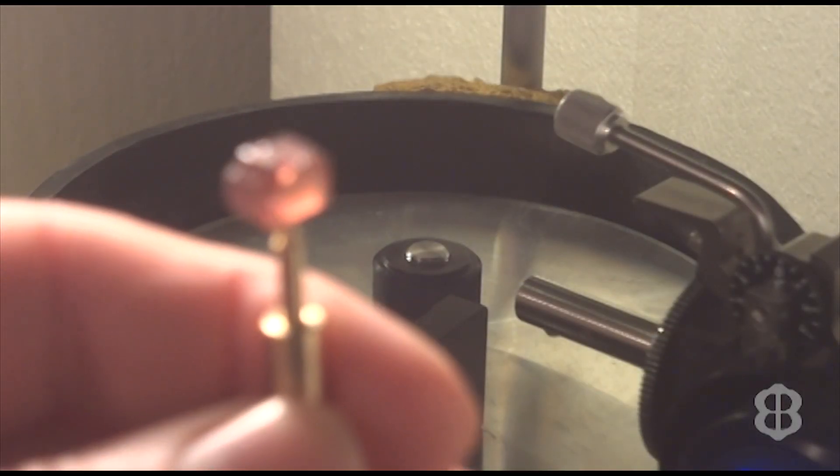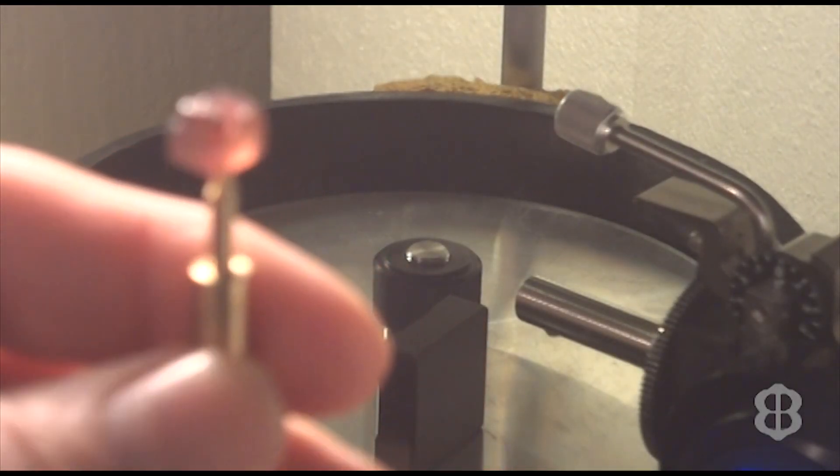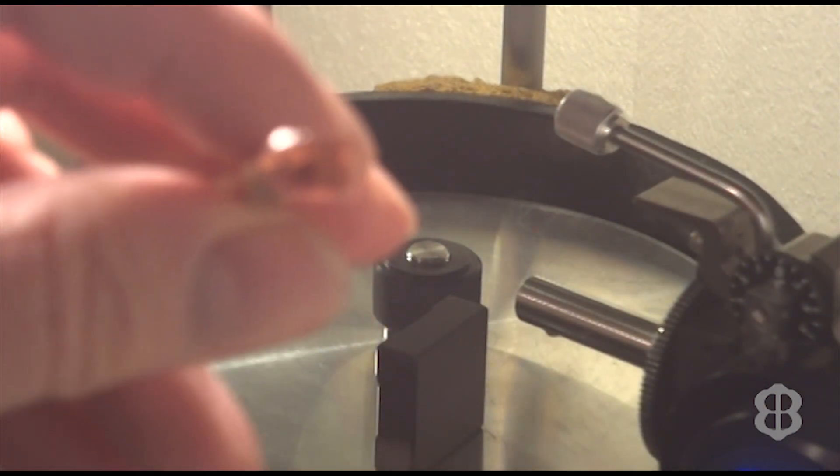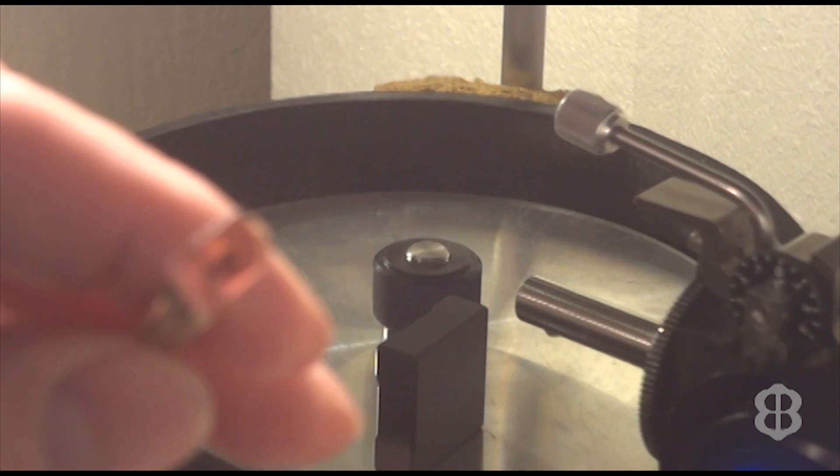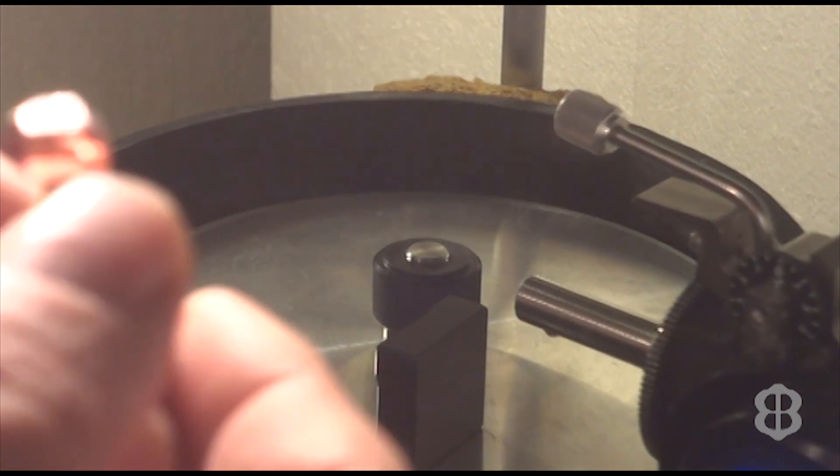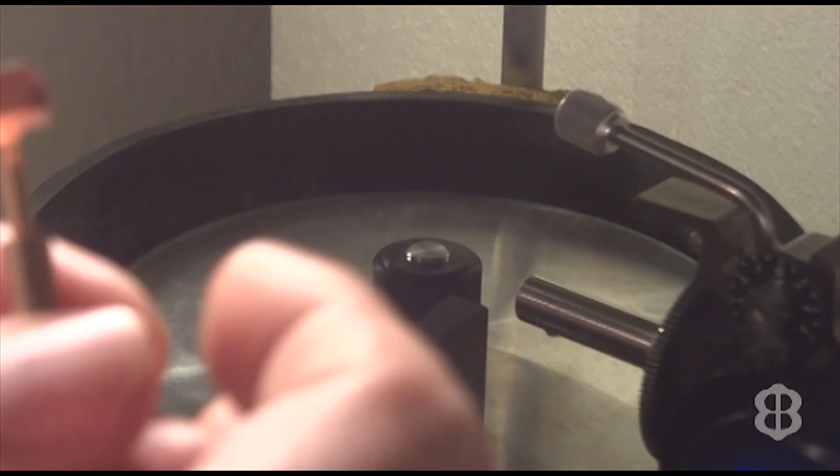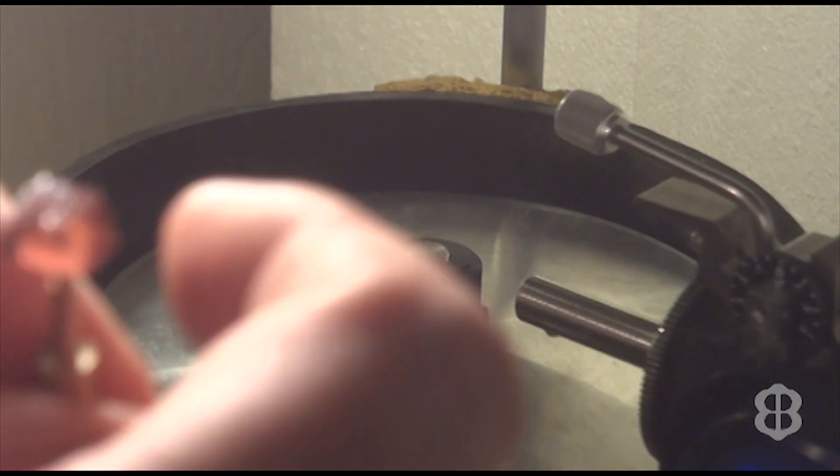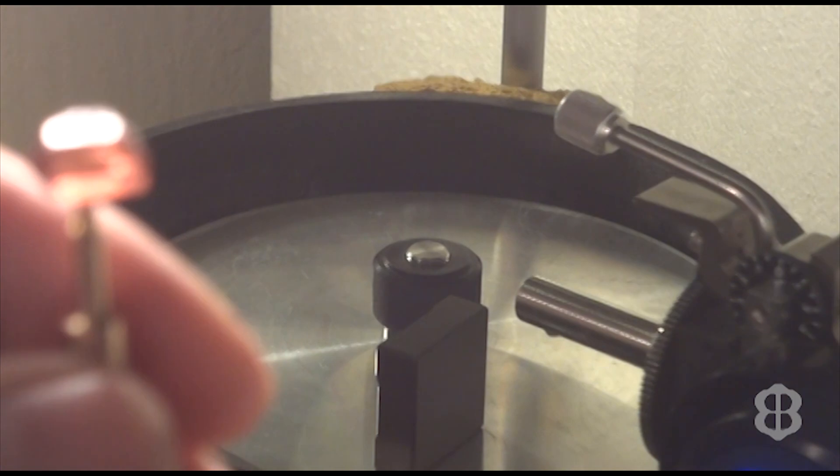This is imperial zircon and it's been mounted onto the dop. Now it's kind of a rectangular shape and we're going to cut it into a hybrid design square Portuguese. So we're going to put it in so that the narrow side of the rectangle is set up in the dop, grind off the long side because there's some inclusions and turn it into a square.